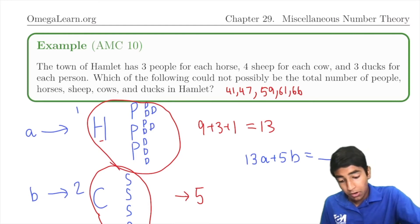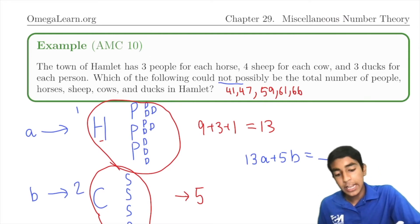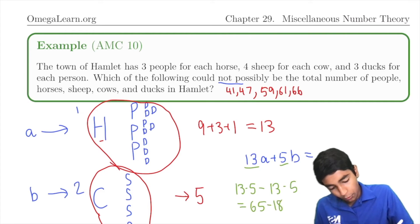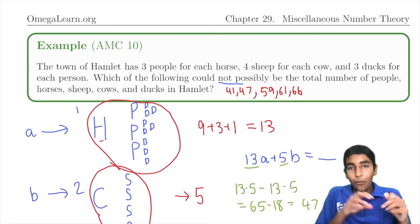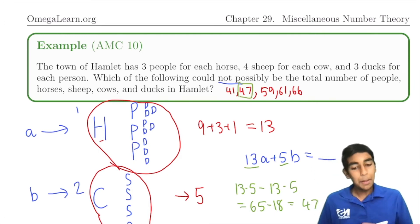13a + 5b will be equal to the number of total organisms. So we're asked to find what could not possibly be this number. Aha! Remember the Chicken McNugget theorem? It states that the maximum value that can't be created with 13s and 5s is 13 × 5 - 13 - 5, which is 65 - 18 = 47. 47 doesn't work for sure by the Chicken McNugget theorem. So 47 is our answer. Cool application.